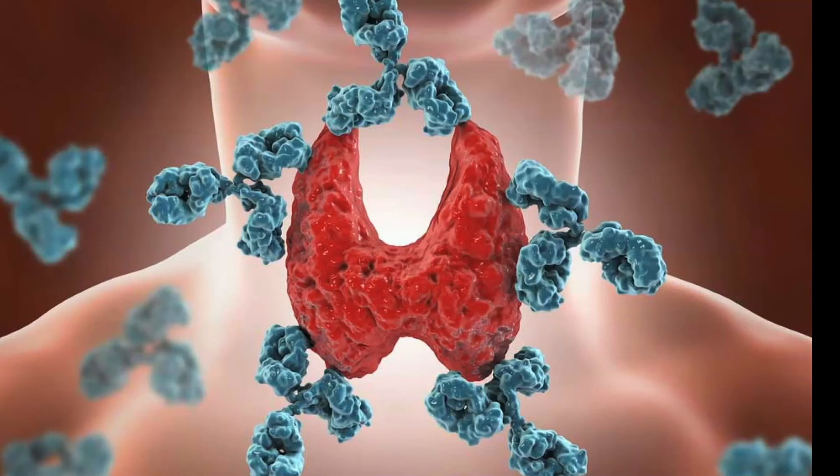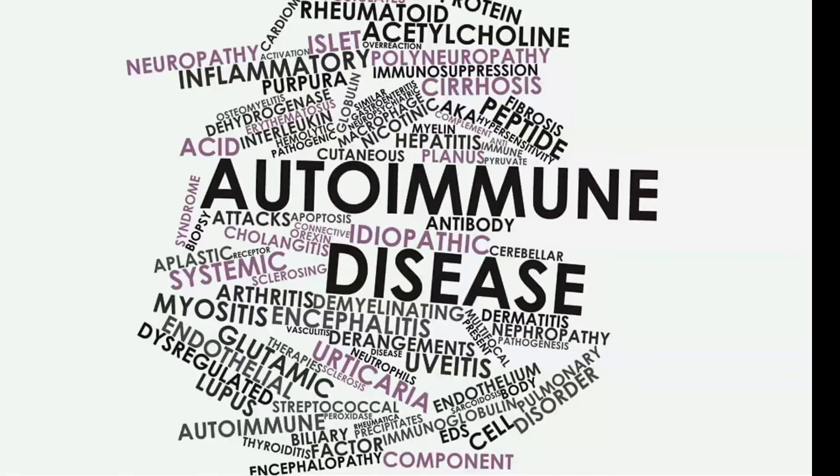When the immune system loses self-tolerance, it will start to target normal tissues as being problematic. Loss of self-tolerance is what we call autoimmunity — this is when the immune system starts to attack your body's own cells inappropriately.